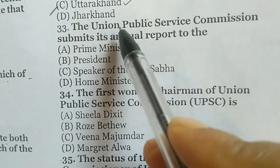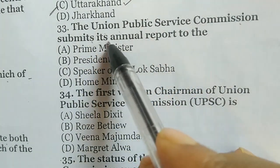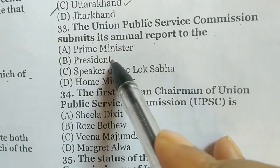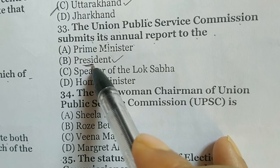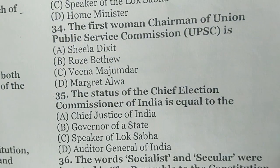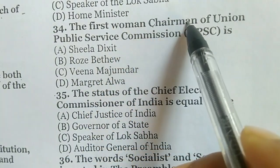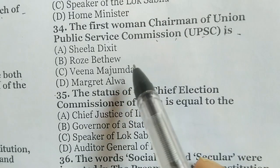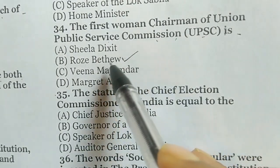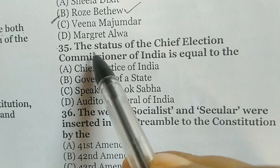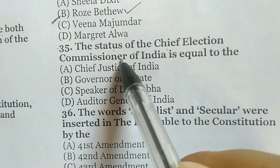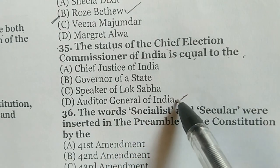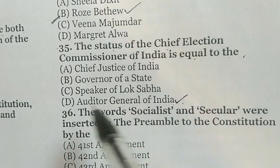The Union Public Service Commission submits its annual report to the — correct answer is the President — option B. The first woman chairman of the Union Public Service Commission is — the correct answer is Rose Bethew — option B. The status of the Chief Election Commissioner of India is equal to the — correct answer is the Auditor General of India — option D.